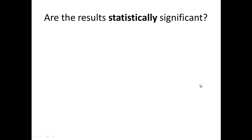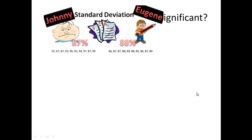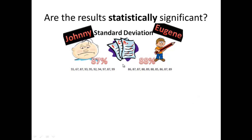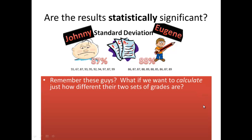Now, we're just going to use a simple example and I'm going to be jumping between a few screens here. Johnny, Eugene, test score averages, these are their raw scores. Johnny clearly has a greater spread or greater standard deviation. Eugene has a smaller spread or smaller standard deviation. So, what if we want to calculate exactly how different their two sets of grades are?